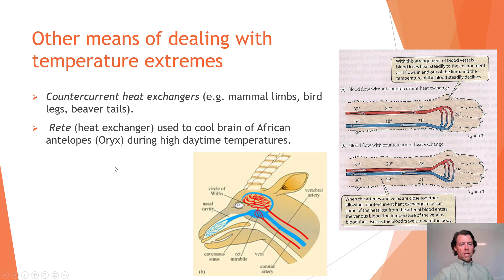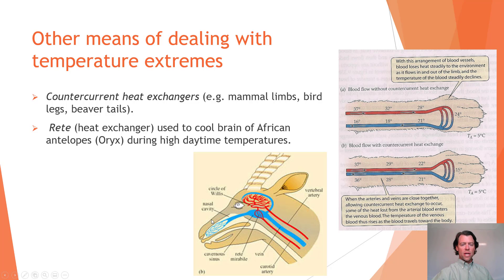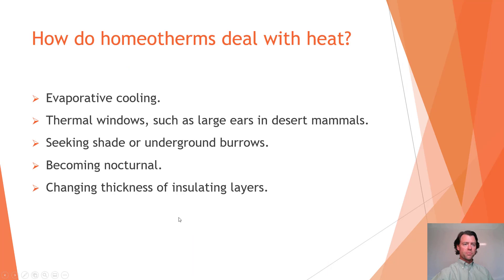There is also a rete (reed) heat exchanger used to cool the brain of African antelopes such as the oryx during high daytime temperatures. Blood is circulated through a rete located in the nasal cavity, and as the animal breathes out, evaporative cooling takes place, helping keep the brain cool.